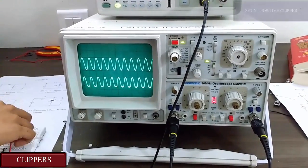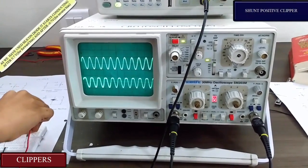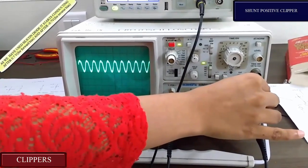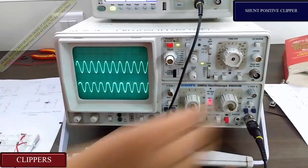And in shunt positive clipper, you can see that some part of the positive is clipped.